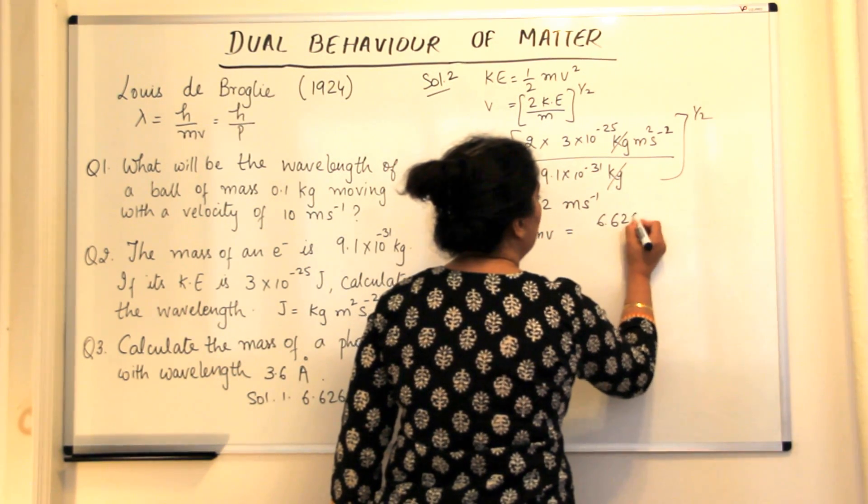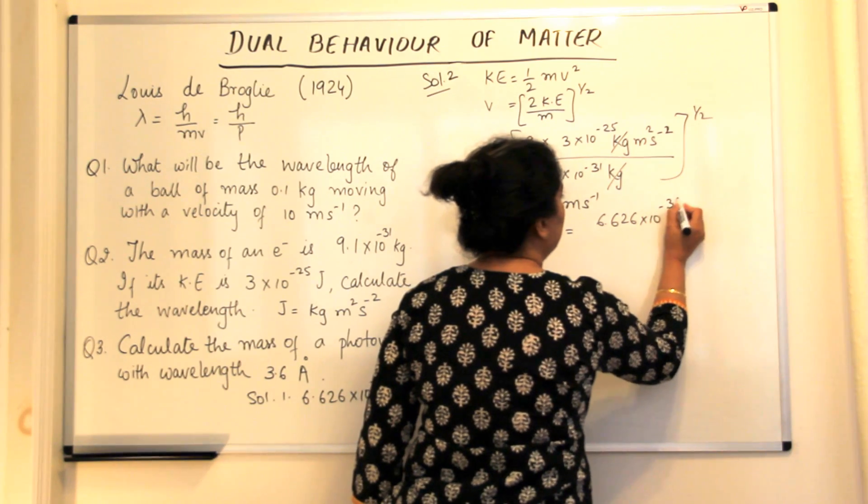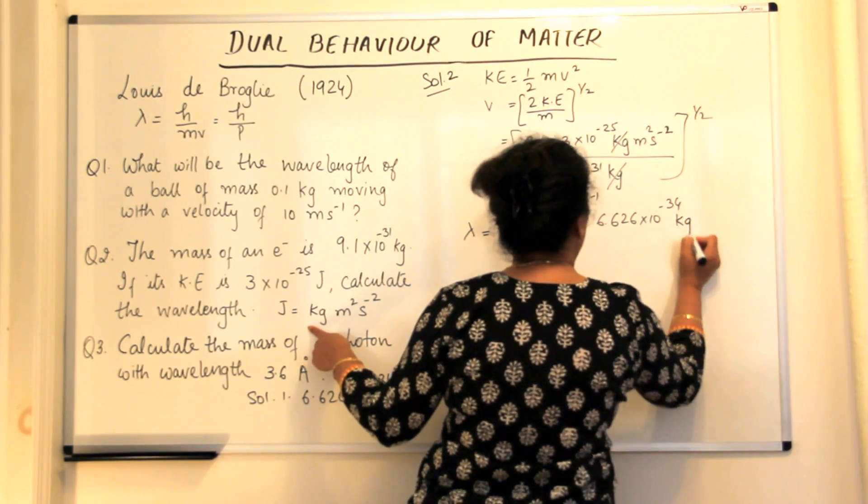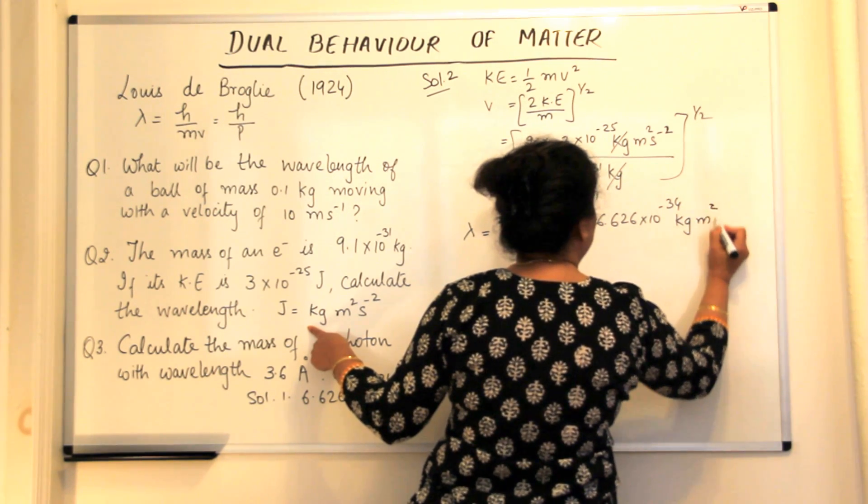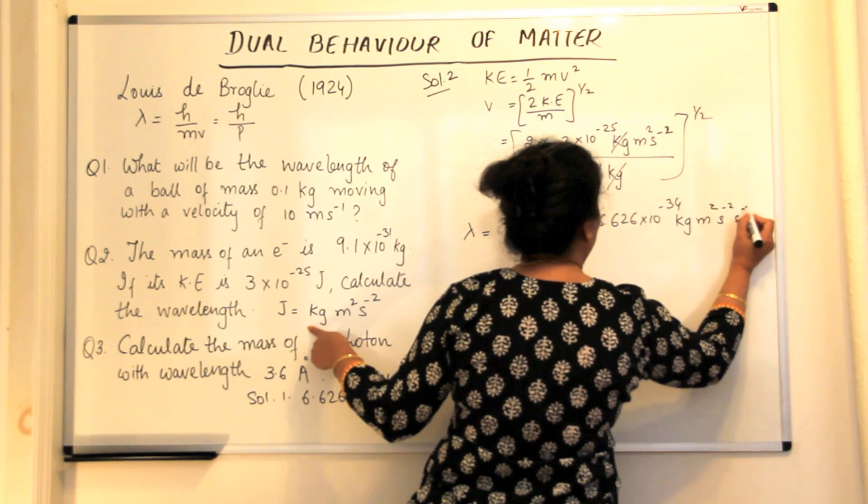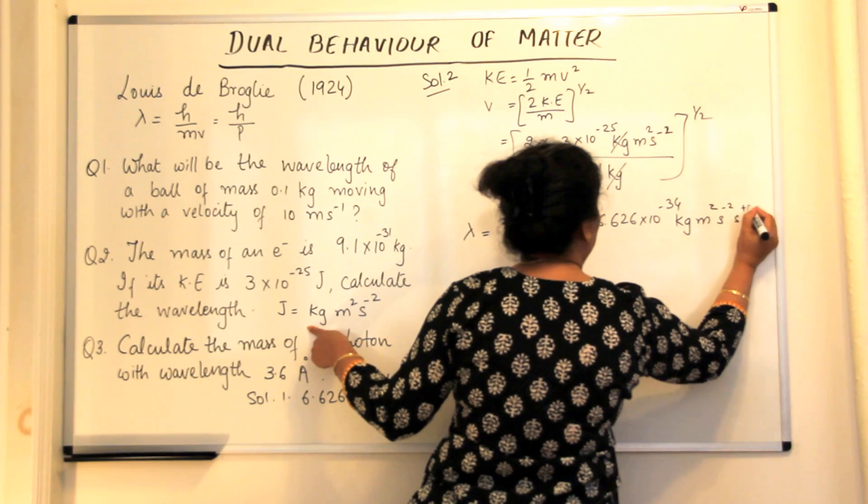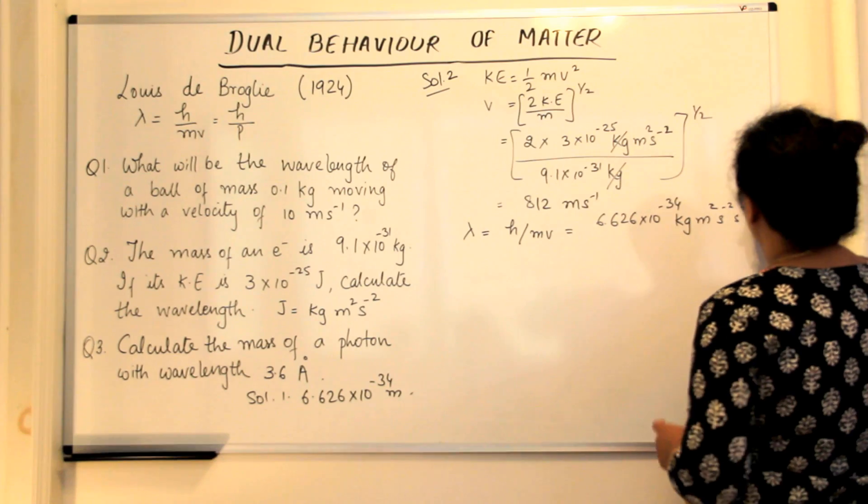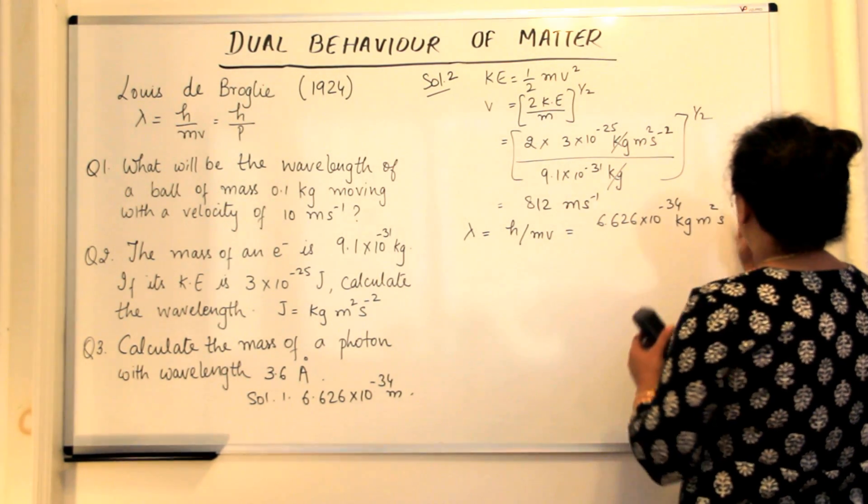Where h is 6.626 into 10 to the power minus 34 joules second. So kg meter square second minus 2, second 1 plus 1. So plus 1 and minus 2 would become minus 1. So we just simplify it here itself.